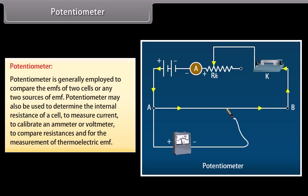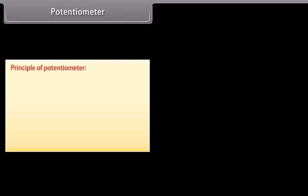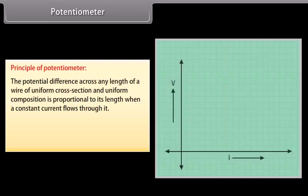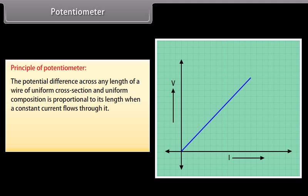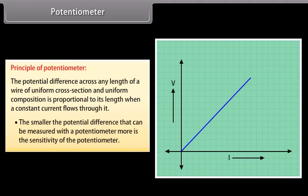A potentiometer is generally employed to compare EMFs of two cells or sources of EMF. It may also be used to determine the internal resistance of a cell, measure current, calibrate an ammeter or voltmeter, compare resistances, and measure thermoelectric EMF. The potentiometer works on the principle that the potential difference across any length of a wire of uniform cross-section and composition is proportional to its length when a constant current flows through it.